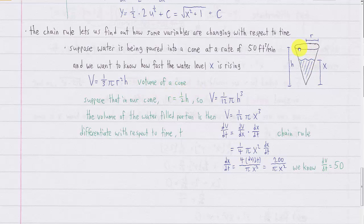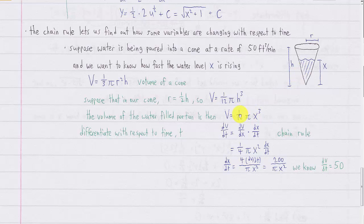Let's say we know that for this container, the radius is equal to one-half of the height. So we can rewrite the volume of the container, replacing r with one-half h, as one-twelfth pi h cubed. Now this is one independent variable h. And since the radius of the container is one-half of its height, the same is true for the smaller cone of water — the radius equals one-half the height of the cone of water.